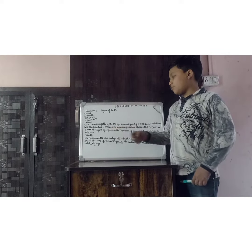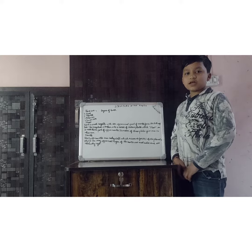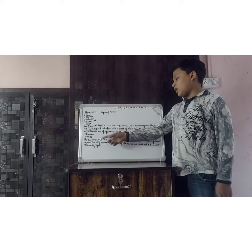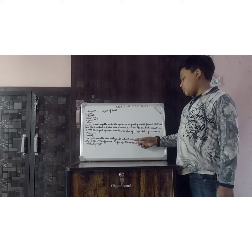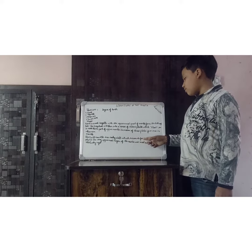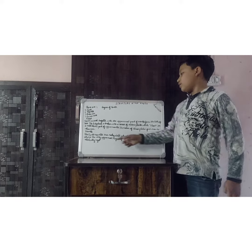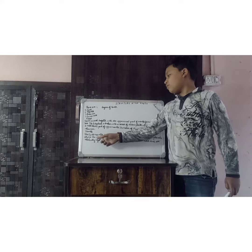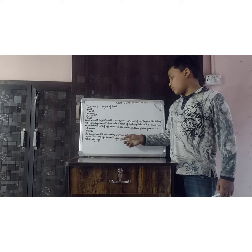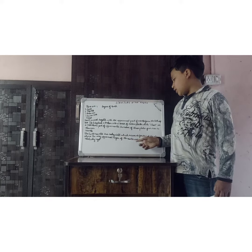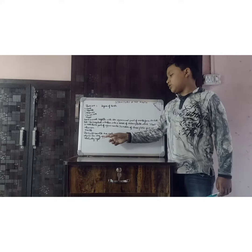Now we discuss about the mantle, the second layer of the earth. The earth's mantle is a rocky shell which accounts for 84% of the planet's volume. The very upper region of the mantle is most solid and relatively rigid.